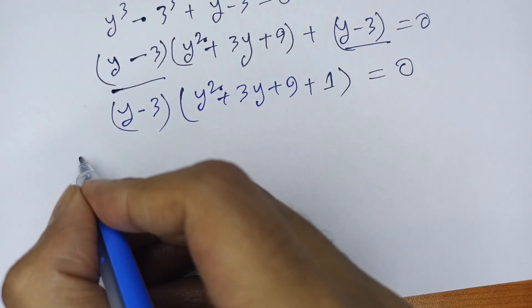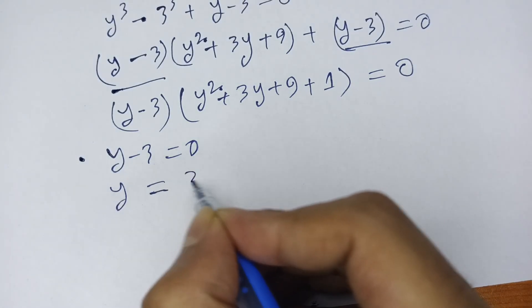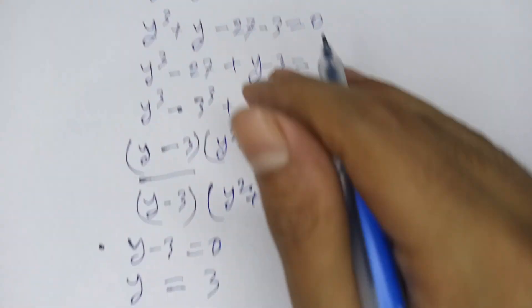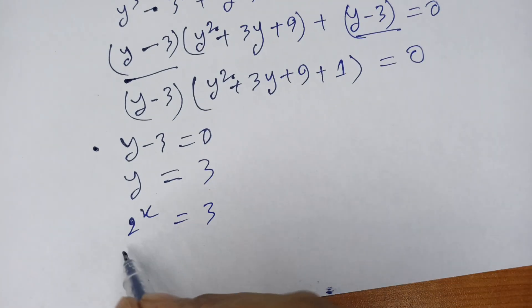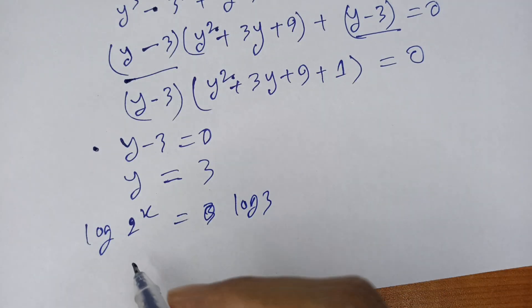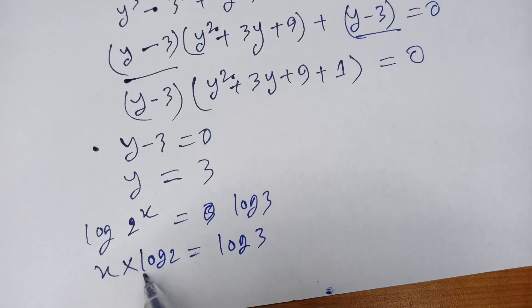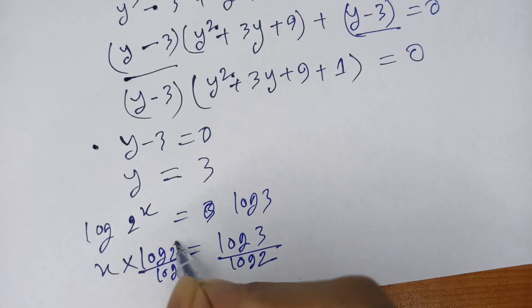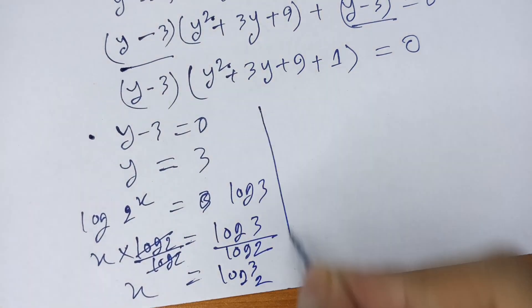Then here, y minus 3 equals 0, so y equals 3. Since y is 2 to the power x, we have 2 to the power x equals 3. Then I use logarithms on both sides, so x times log 2 equals log 3. If I divide both sides by log 2, x equals log 3 divided by log 2. So x equals log base 2 of 3.